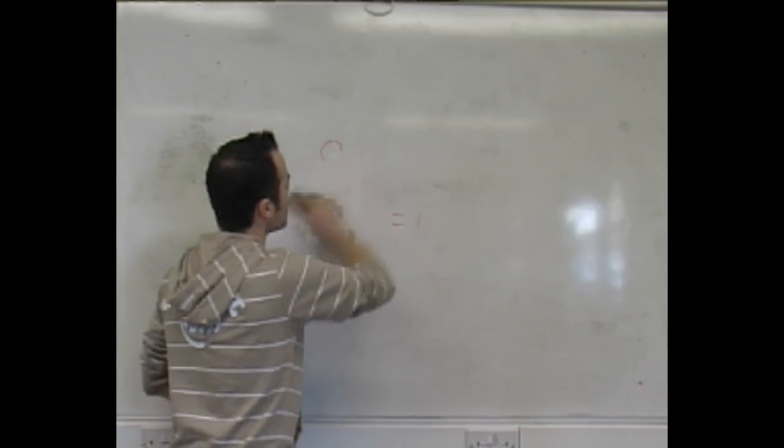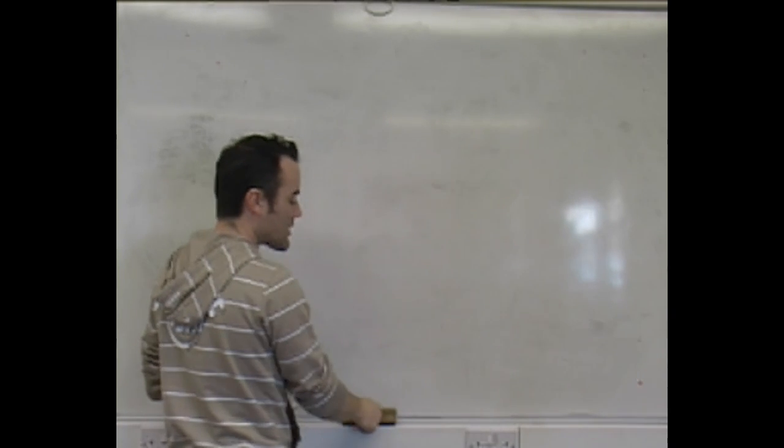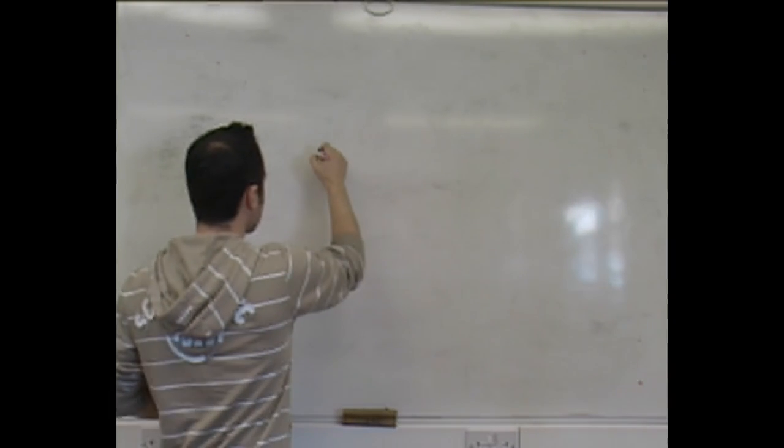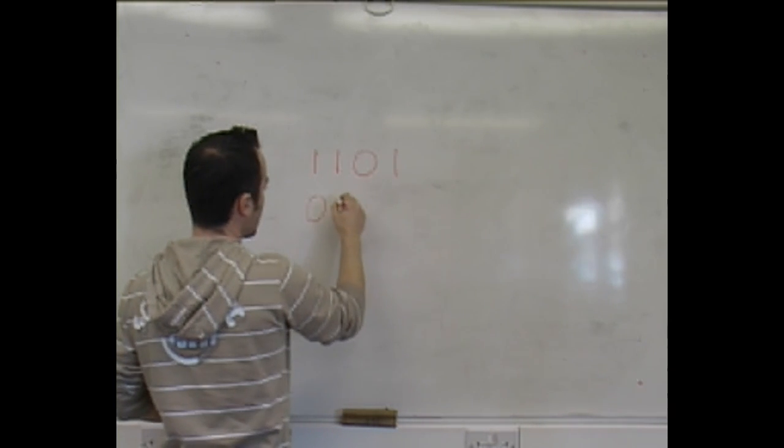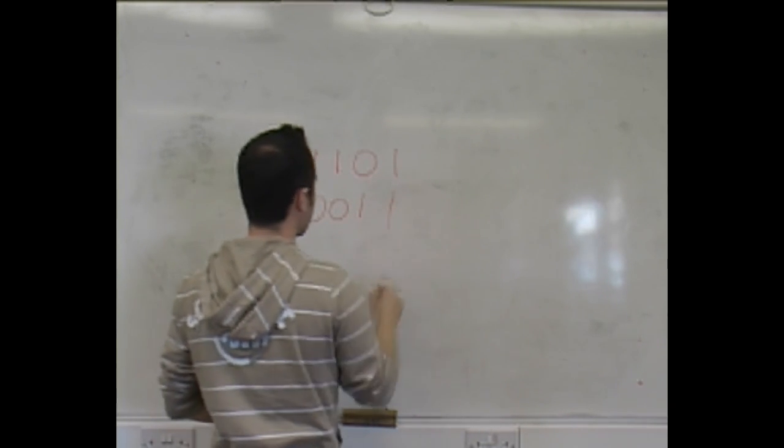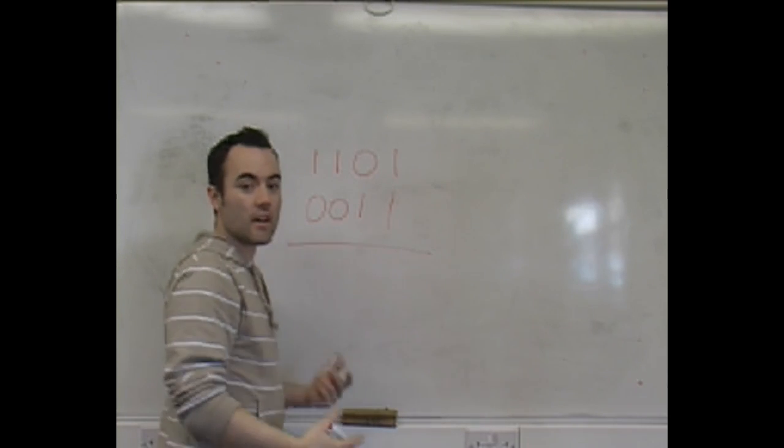So, let's say you're given two binary digits to add up: 11010 and 00111. Okay, that's what we're trying to add here.